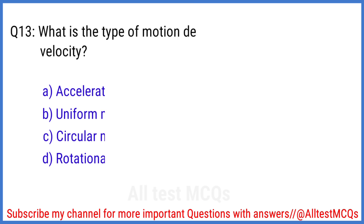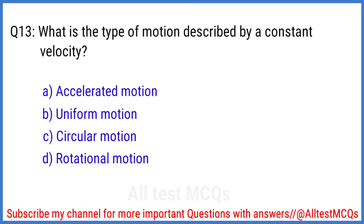Q13. What is the type of motion described by a constant velocity? The right answer is option B. Uniform motion.